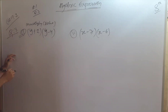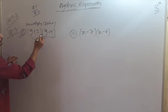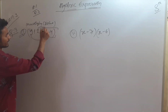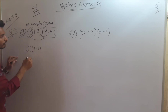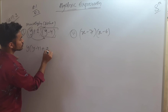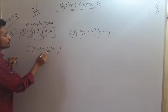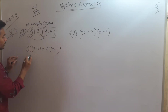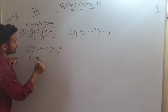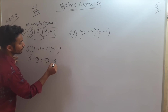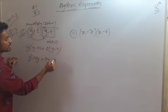We have to open the bracket. The y will multiply with the whole bracket: y into (y-4). Then we have plus 1 into (y-4). So y into y is y², then y into (-4) is -4y. Then we have positive 1 into y which is +2y, wait — plus 1 into y is y, and 1 into minus 4 is minus 4. Because plus times minus is minus, giving minus 8.